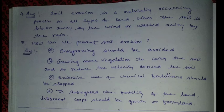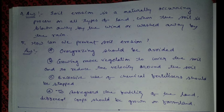Number five: How can we prevent soil erosion? A) Overgrazing should be avoided. B) Growing more vegetation to cover the soil and reduce the velocity around the soil. C) Excessive use of chemical fertilizers should be stopped. D) To safeguard the fertility of the land, different crops should be grown on farmlands.